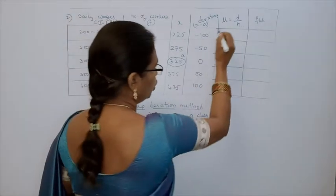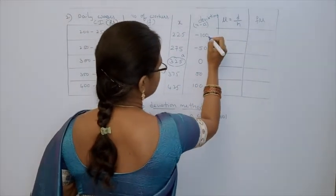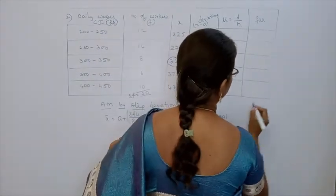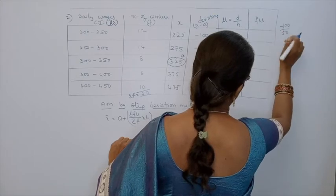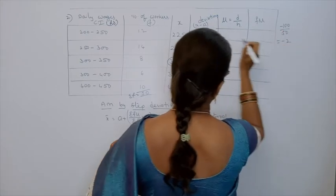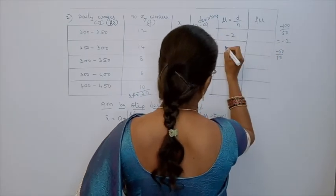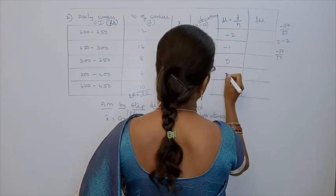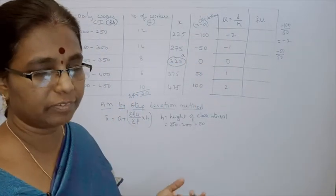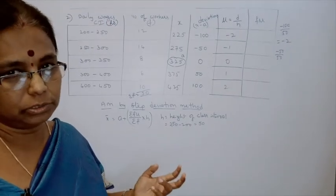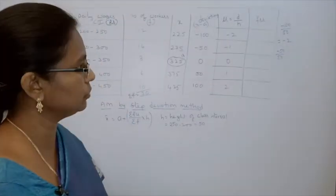Now how to find U: U = D/H. So: −100/50 = −2; −50/50 = −1; 0/50 = 0; 50/50 = 1; 100/50 = 2. This U value always gives small integers. Above 0 are negative; below 0 are positive numbers.